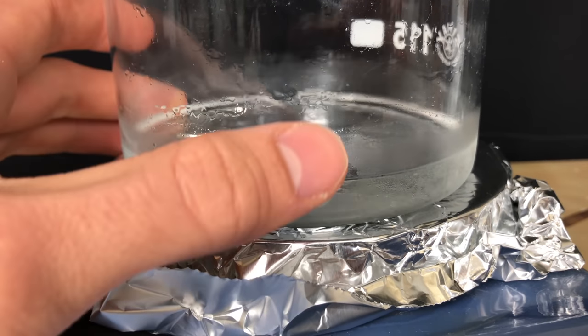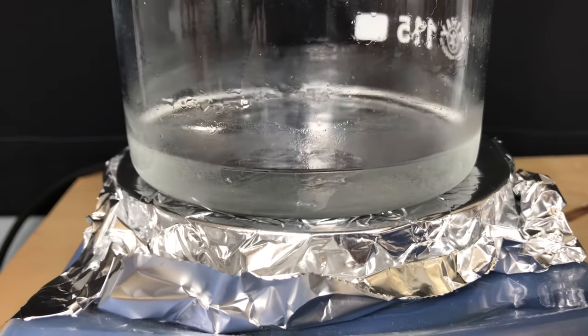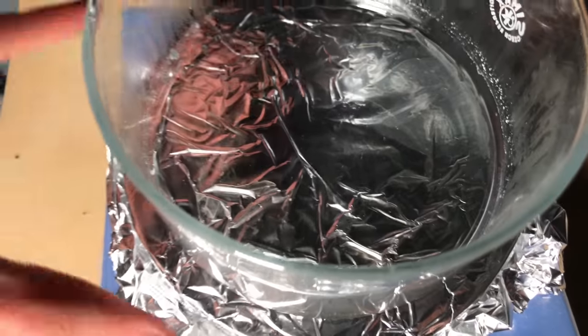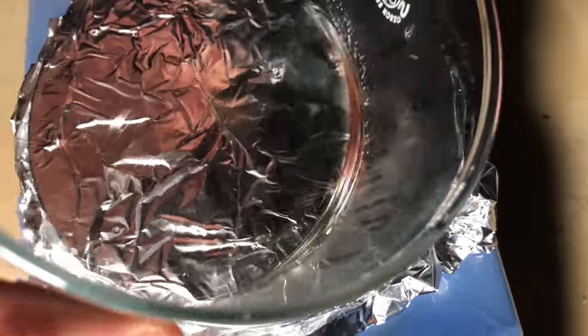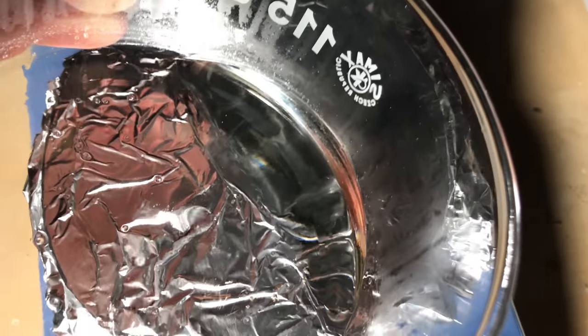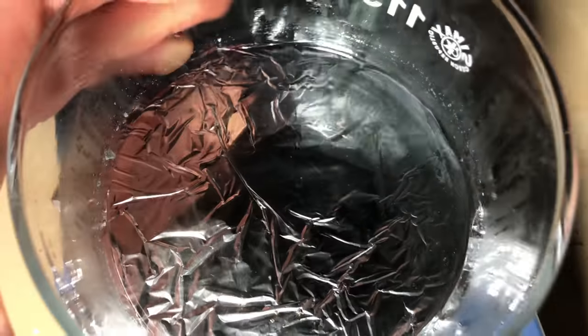To evaporate off the DCM gently, our hot plate was set to 52 degrees Celsius and it was boiled off. In the end it looked like this, and because it was still liquid, I put it into my vacuum chamber over anhydrous calcium chloride.